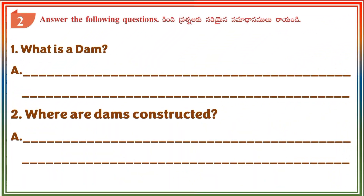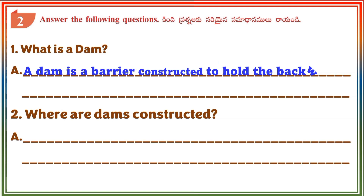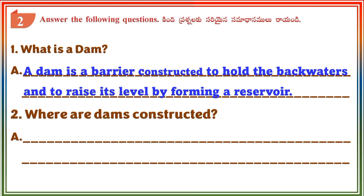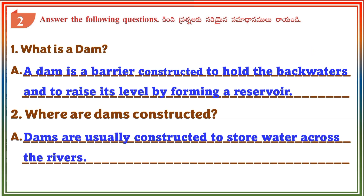Section 2: Answer the following questions. Question 1: What is a dam? Answer: A dam is a barrier constructed to hold back water and to raise its level by forming a reservoir. Question 2: Where are dams constructed? Answer: Dams are usually constructed to store water across the rivers.